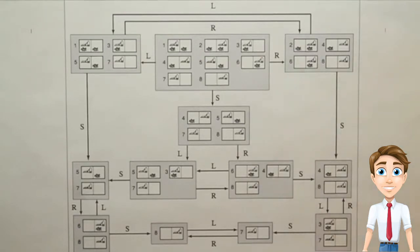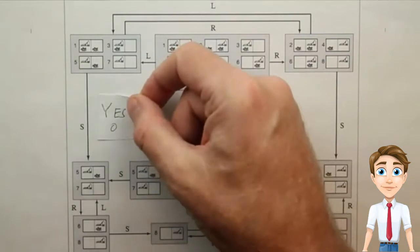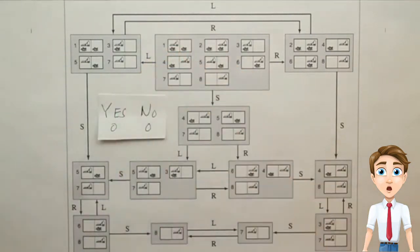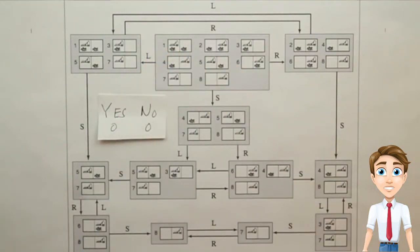And then I want you to click on yes if that path is guaranteed to always reach the goal, and no if the path only sometimes reaches the goal.